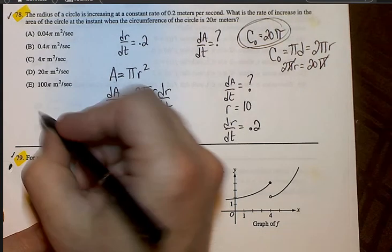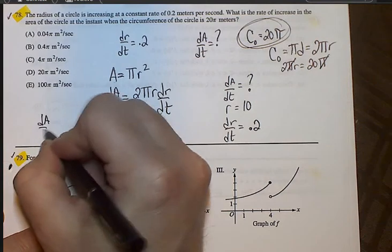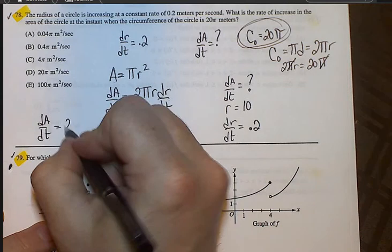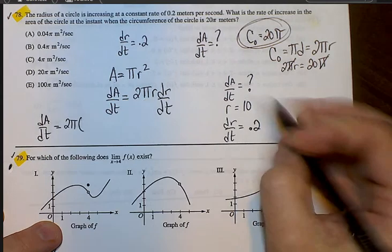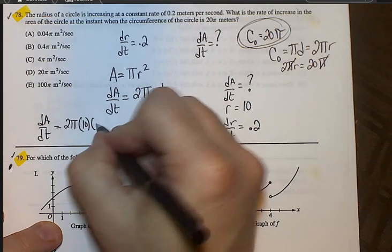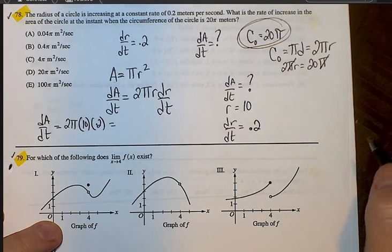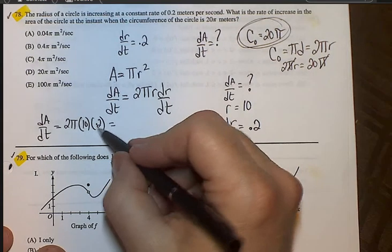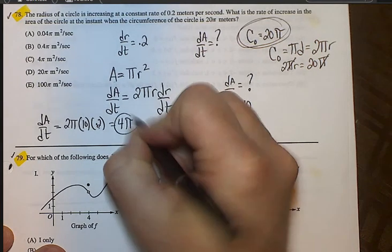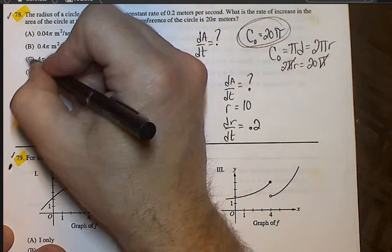And now we're ready to plug in. So we have our dA/dt, which is what we're looking for, is going to equal 2πr, r we said was 10, times 0.2. Alright, when we do this, 2 times 0.2 is 0.4, times 10, this is just simply 4π. Choice C.